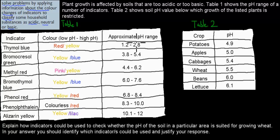So this kind of question is a quite common question you might be facing. And it tests your skills if you know what indicators are and how you could use them to actually assess things in terms of can things grow there or is it an acidic, neutral or basic substance. So in this case, we're actually being asked, so the question is explain how indicators could be used. So explain is a verb. How indicators could be used to check whether the pH of the soil in a particular area is suited for growing wheat.